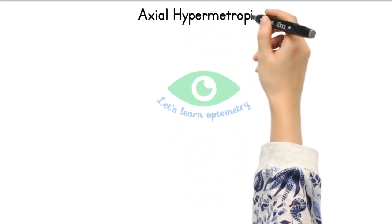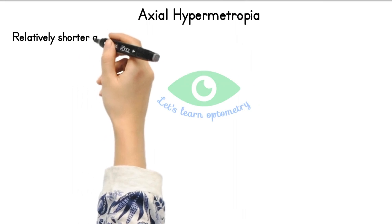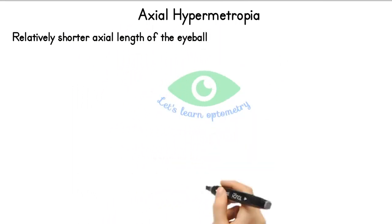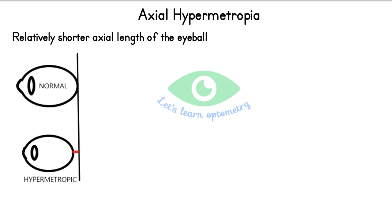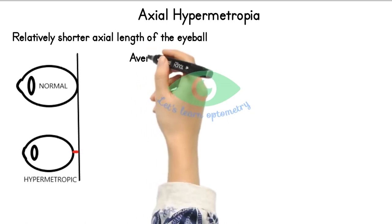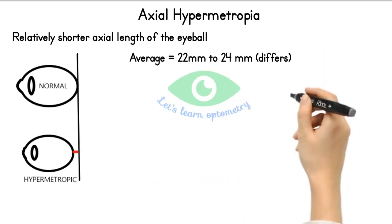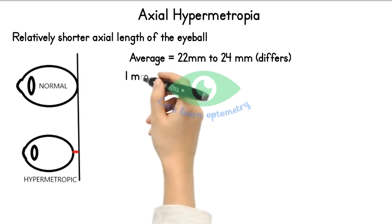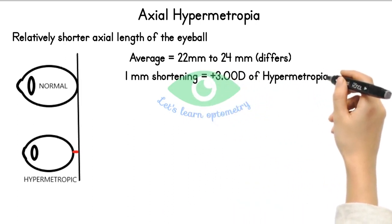Axial hypermetropia is due to relatively shorter axial length of the eyeball. The average axial length is around 22 to 24 mm, though this differs between studies. Basically, 1 mm shortening of axial length causes 3 diopters of hypermetropia.